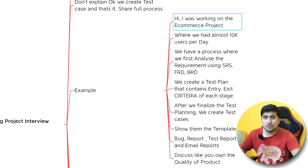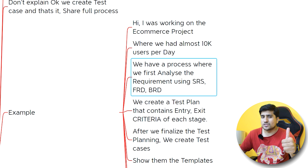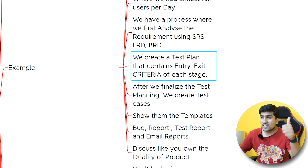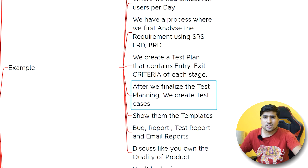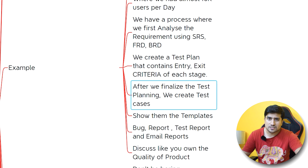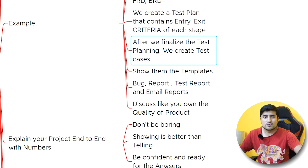Instead, here's how you should explain: say something like, 'Hi, I was working on an e-commerce project; we had almost 10k users per day.' Tell them about the numbers. Mention that you had SRS, software requirements, functional requirements, or BRDs. Say that you created a test plan with entry criteria and exit criteria. Whenever you talk about these keywords, the interviewer will know you understand the core concepts of manual testing.